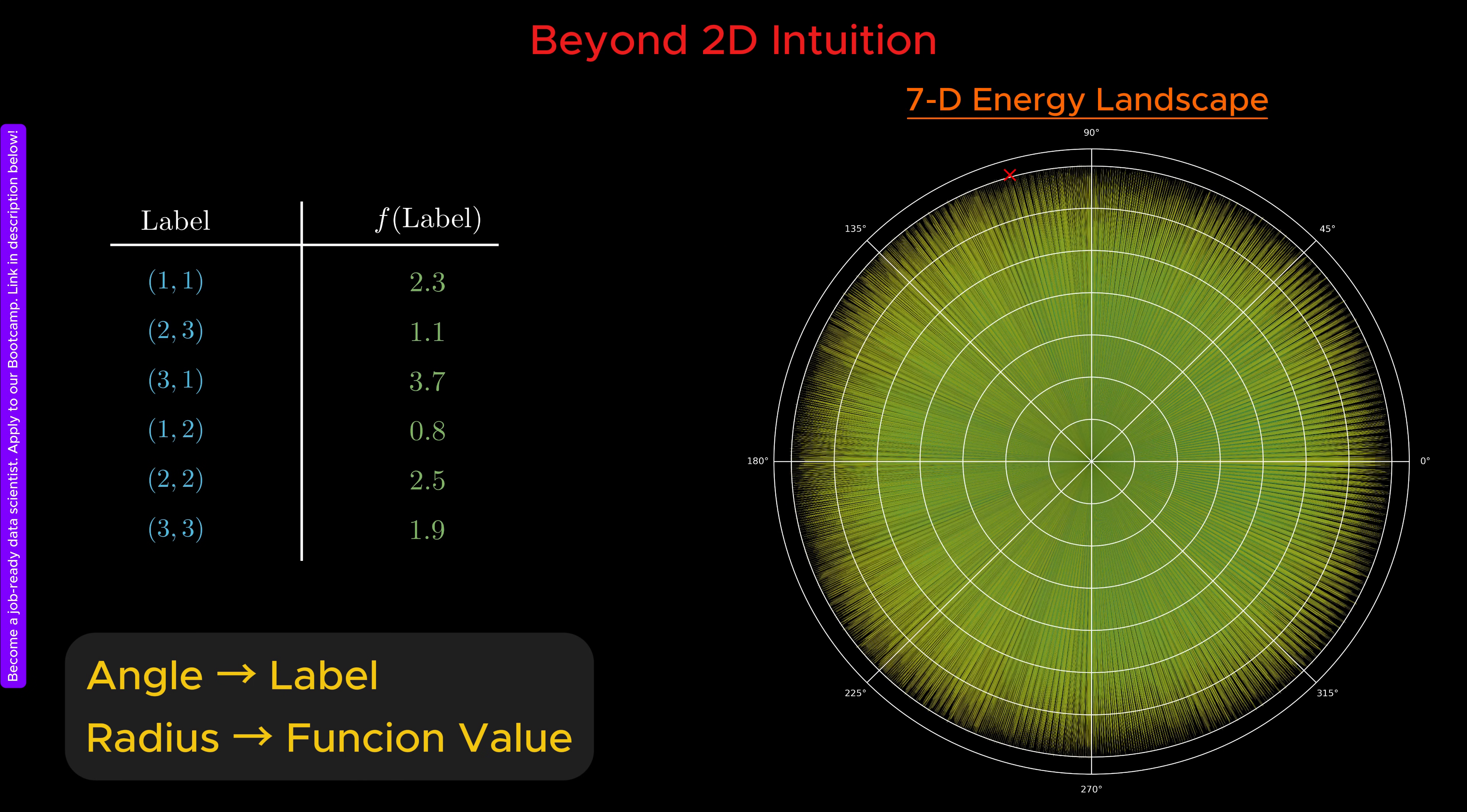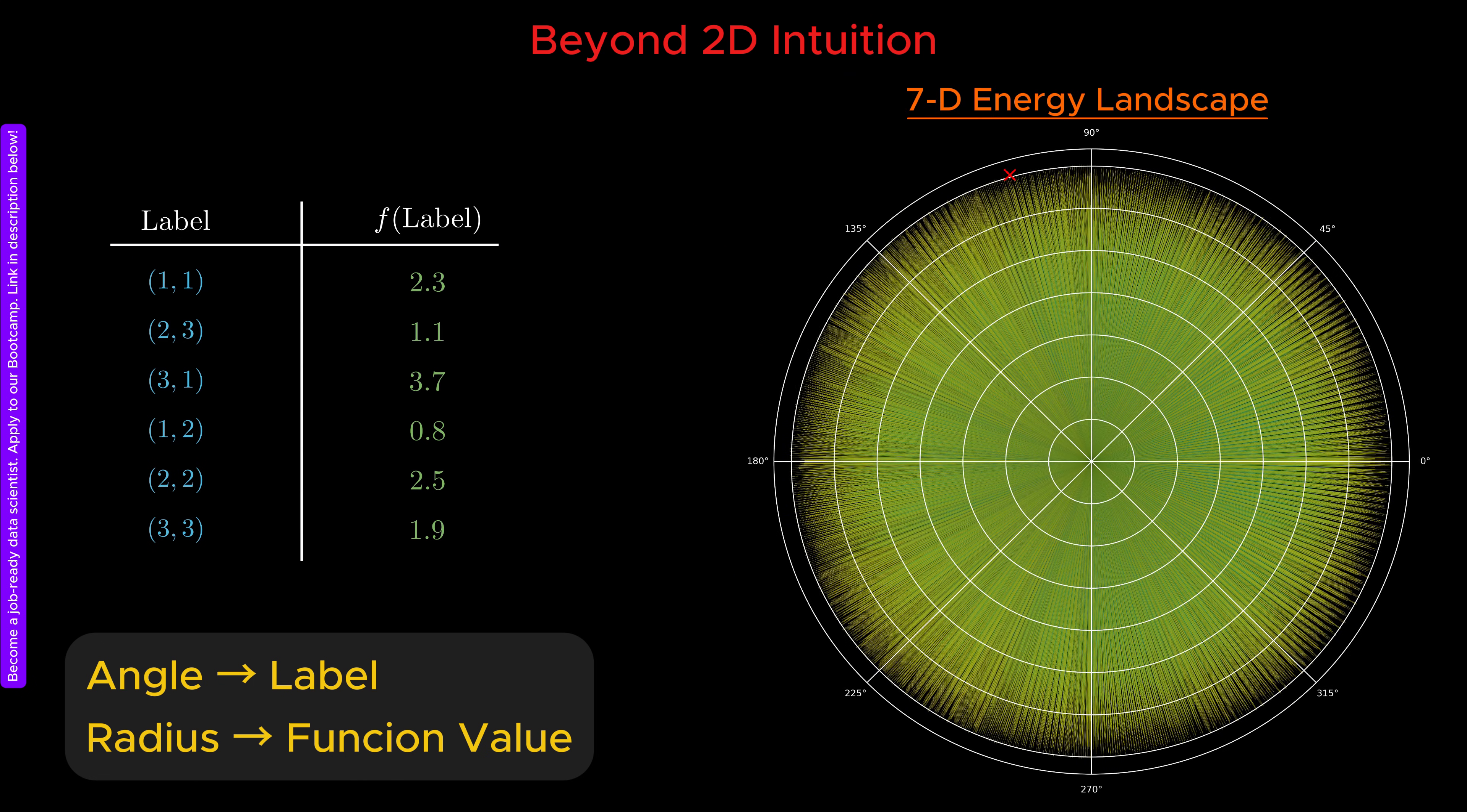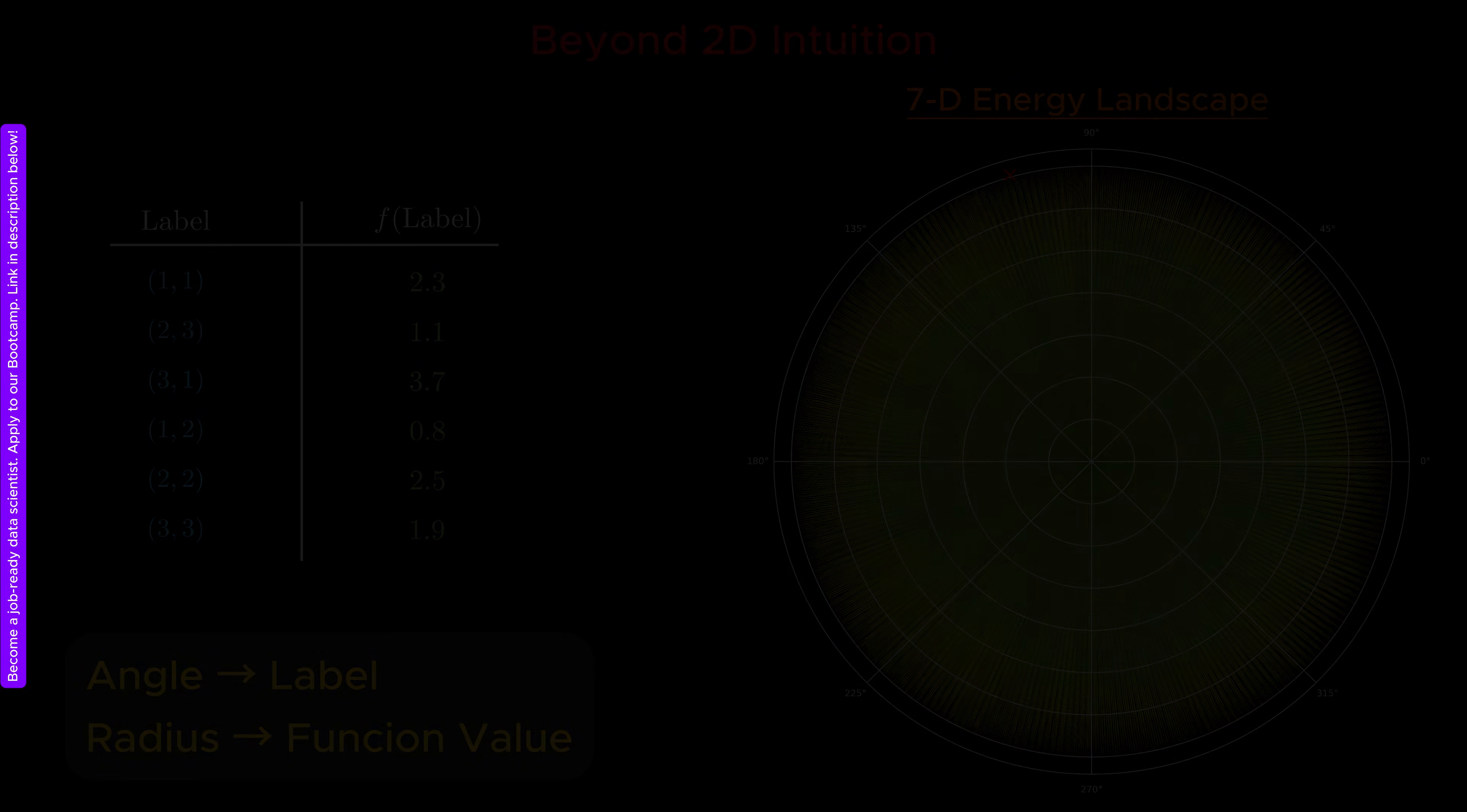The key advantage of this approach is that it completely removes the limitation on the number of variables. No matter how many variables the function depends on, we can merge them into a single label and visualize the entire landscape at once. Let me now move on to the first concrete use case.